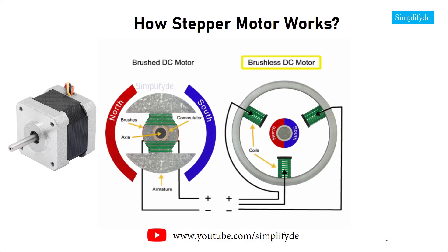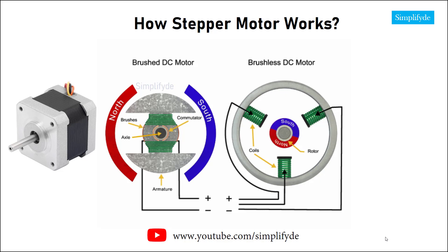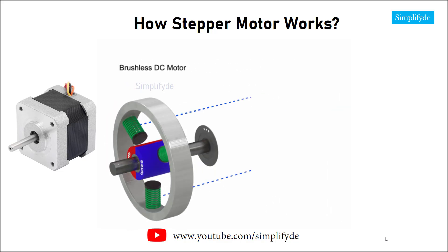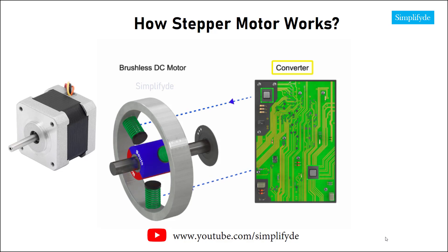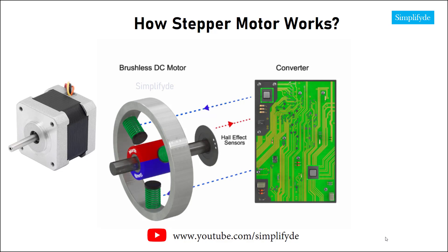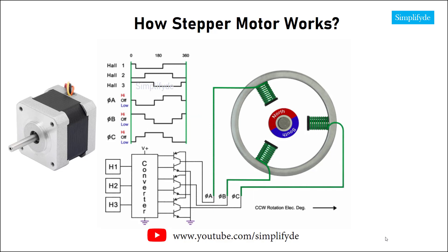Unlike DC brush motors, DC brushless motors do not utilize brushes to control current. Permanent magnets bonded directly to the rotor of the brushless DC motor create rotational motion as current passes through the stator. A rotating magnetic field is formed by electrical pulses generated by a converter.